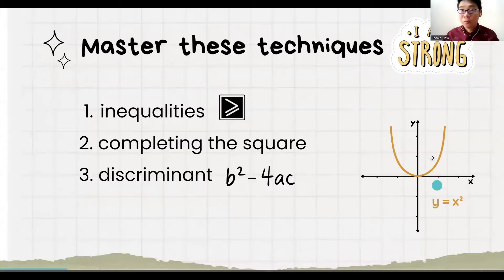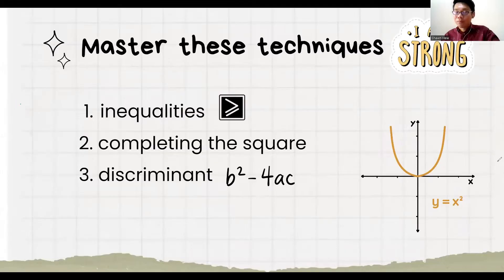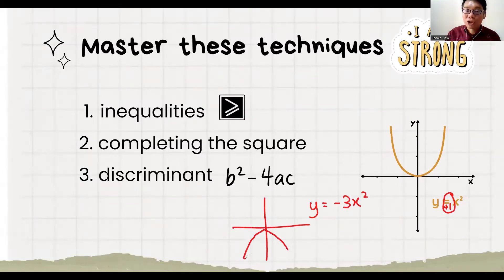First of all, we know that quadratic is anything where the maximum power of x is 2. The shape is u-shape or n-shape, depending on whether the coefficient in front of x-squared is positive or negative. If it's positive 1, it's a u-shape. But if y equals negative 3x-squared, then the n-shape is reversed. So there are 3 parts we need to know how to solve.